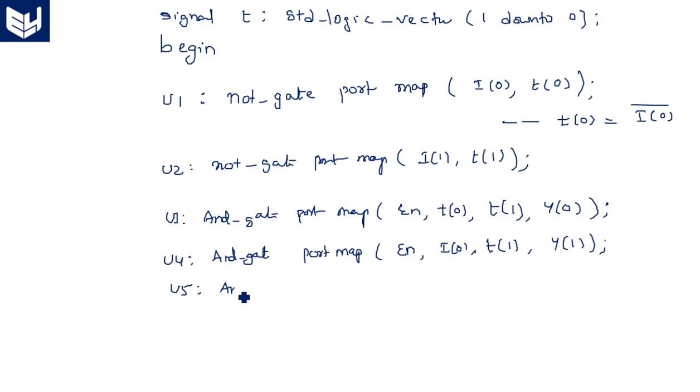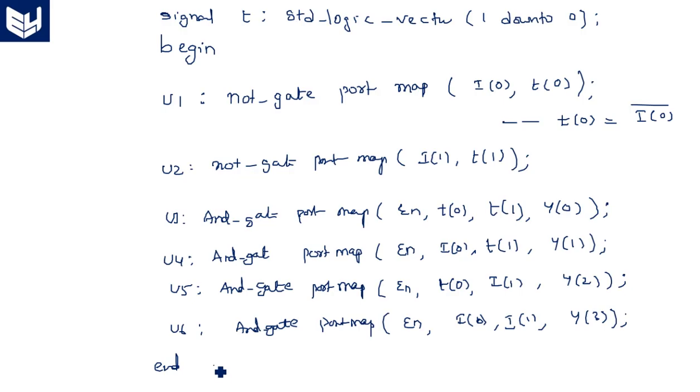Now U5 is equal to AND_gate port map of enable. It is T of 0, I of 1, and Y of 2. U6 is equal to AND_gate port map of enable. Directly both are in the true form, so I of 0, I of 1, and Y of 3. End decoder structural.